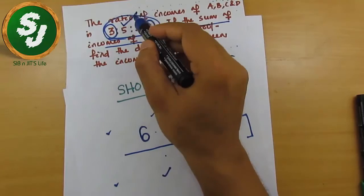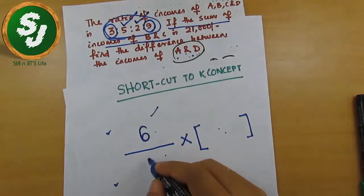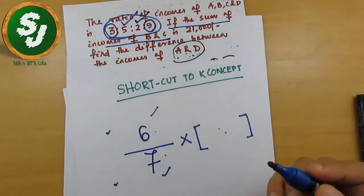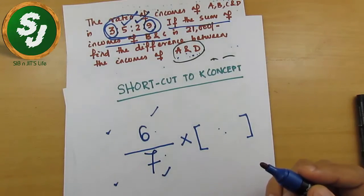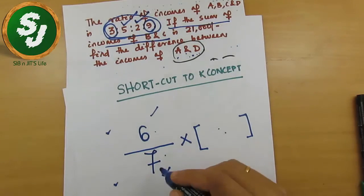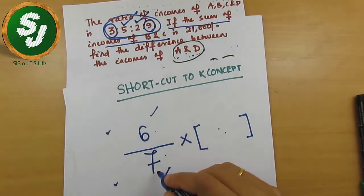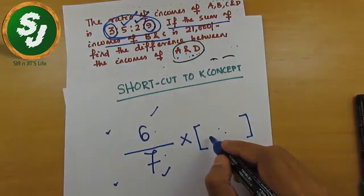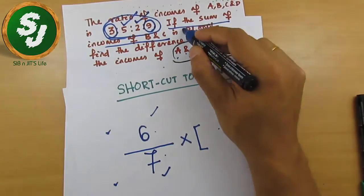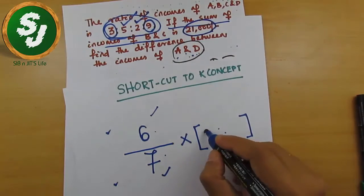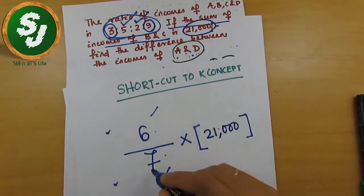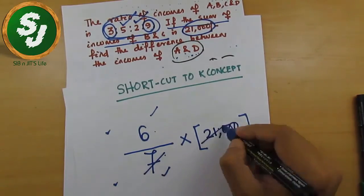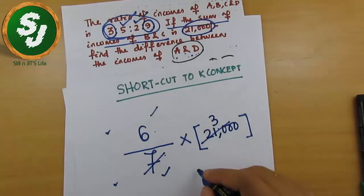The sum of incomes of B and C in the ratio is 5 + 2, which is 7. So I am writing 7 in the denominator. And the number given in the question is 21,000, so I am writing 21,000 here. I directly cancel — so this becomes 18,000.